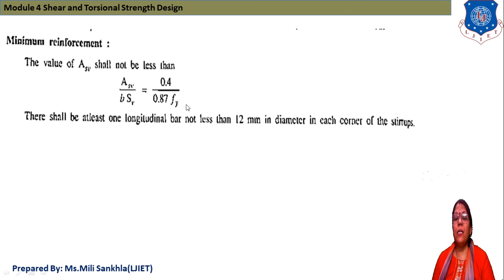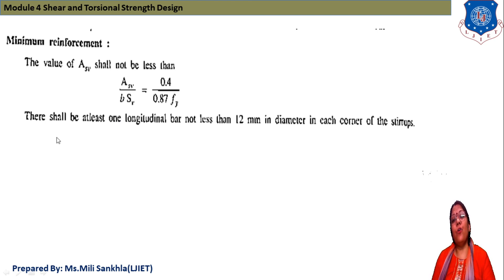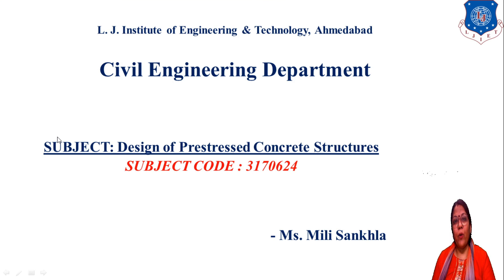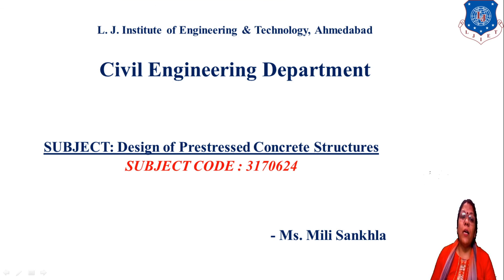For minimum reinforcement: ASV / (B × SV) = 0.4 / (0.87 FY). Longitudinal bars shall not be less than 12 mm in diameter at each corner of the stirrups. In the next session, we will solve an example on torsion design.